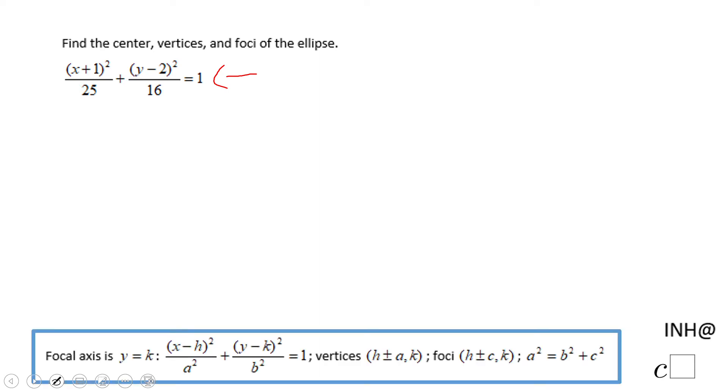So first of all let's take a look. This is the general form of an ellipse and if we look at this form and the one given, we can see that h should be negative one because x plus one is the same thing as x minus negative one, and k should be two. That gives us the center which is negative one and two.